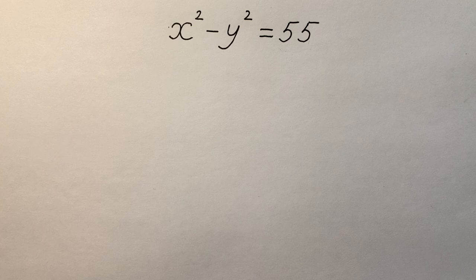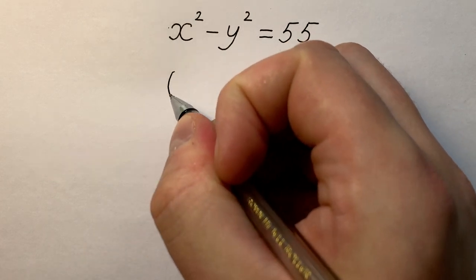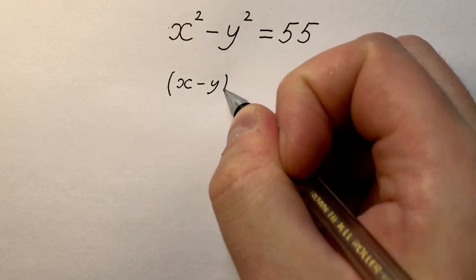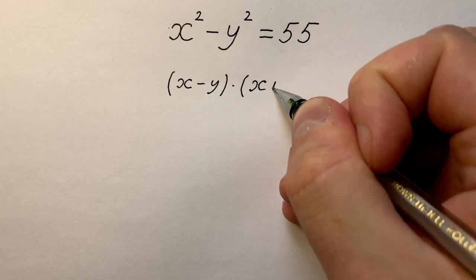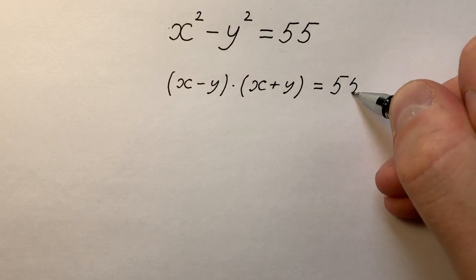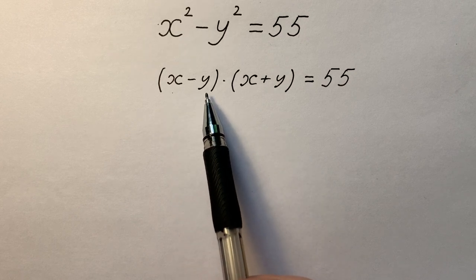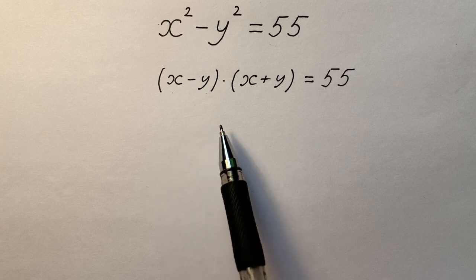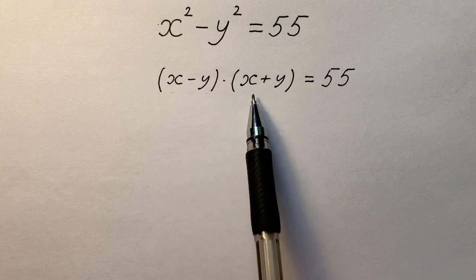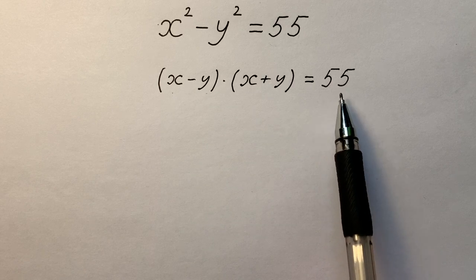The left side equals to (x - y)(x + y) and it equals 55. As we know that the set of x and y belongs to the set of integers, we can understand that the left side is a product of two whole numbers which gives us 55.